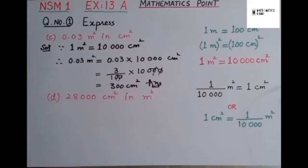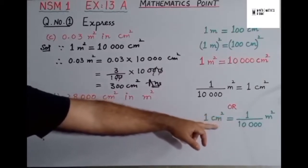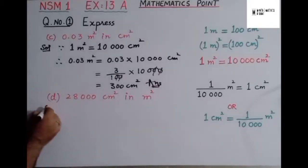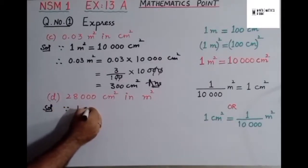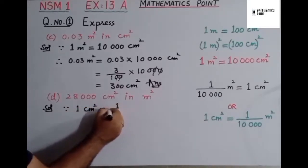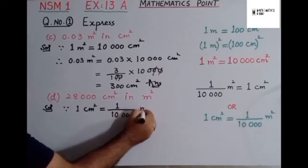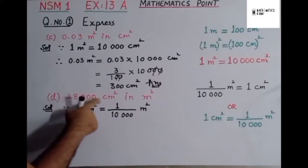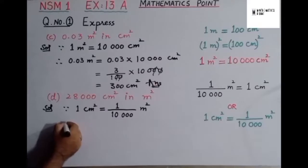In Part D, we have to express 28,000 centimeter square in meter square. We know that 1 centimeter square is equal to 1 over 10,000 meter square, so we will use this formula. Therefore, 28,000 centimeter square is equal to 28,000 multiplied by 1 over 10,000 meter square.